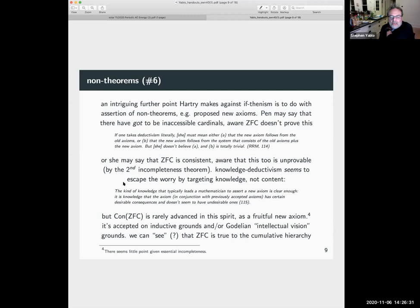Knowledge deductivism seems to escape this worry by targeting not content, but knowledge. This is, Hartree says, the kind of knowledge that typically leads a mathematician to assert a new axiom is clear enough. It's knowledge that the axiom, in conjunction with previously accepted axioms, has certain desirable consequences and doesn't seem to have undesirable ones. But while this might be true for certain large cardinal axioms, say, the consistency of ZFC is rarely advanced in this spirit.